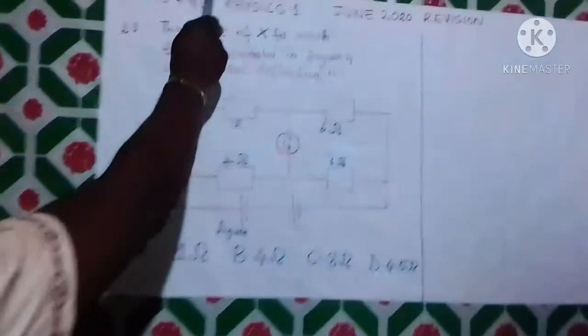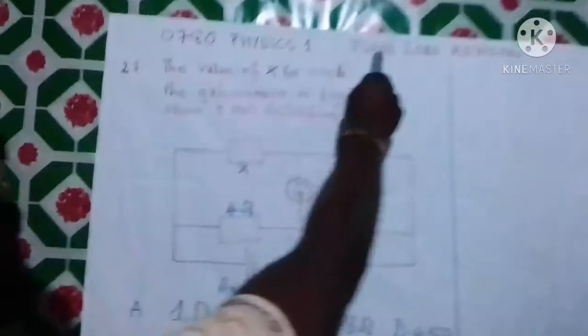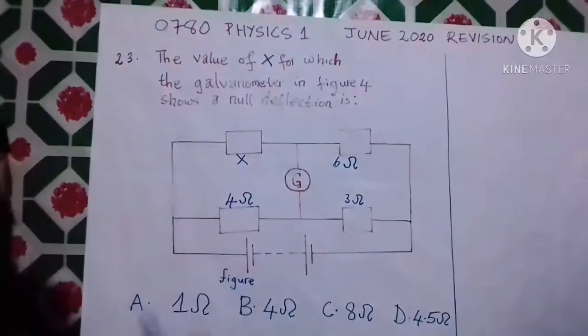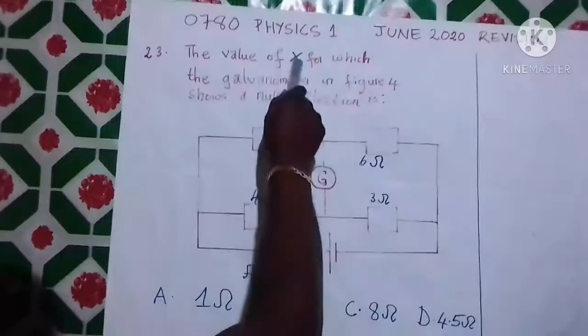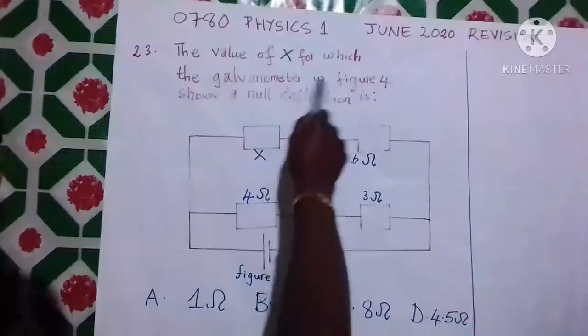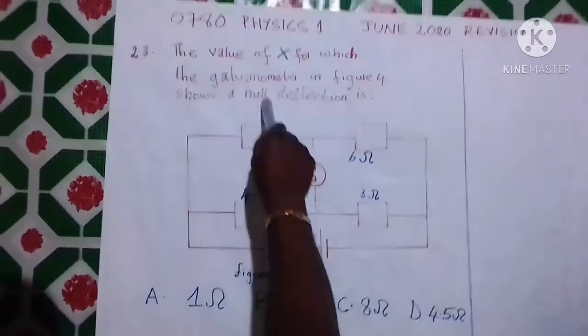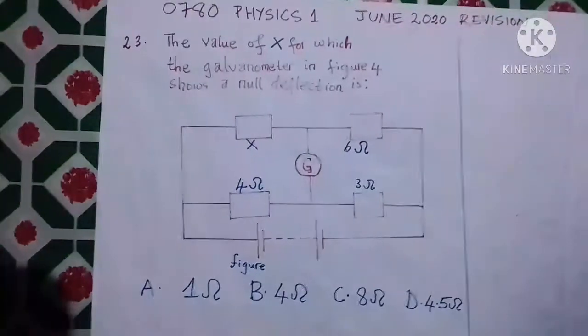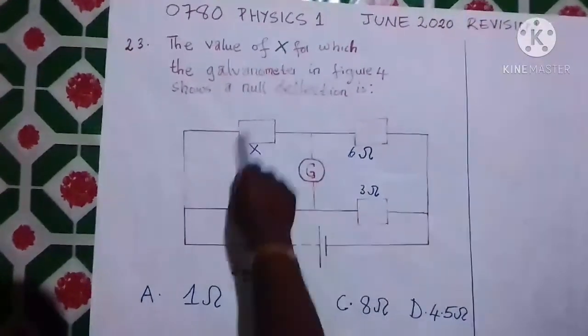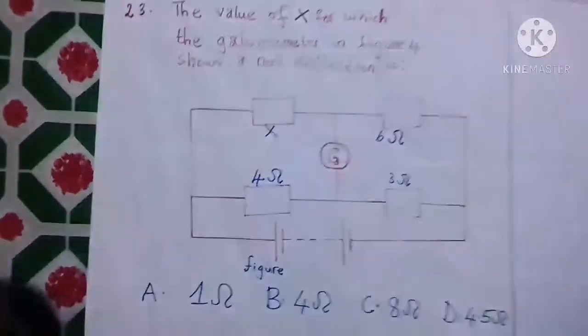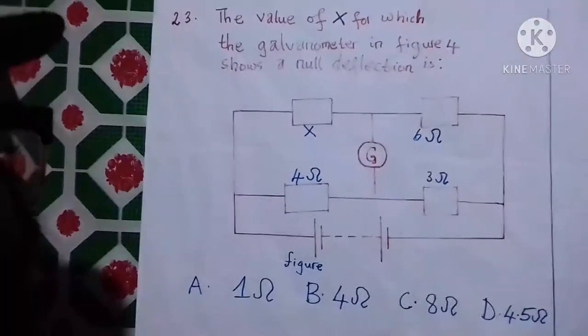Hello viewers, today I'm going to solve question number 23 of 0780 Physics 1, June 2020 session. The question says: the value of capital X for which the galvanometer in figure 4 shows a null deflection is... This is capital X representing the resistance of this component, so we are going to solve for it to find out.